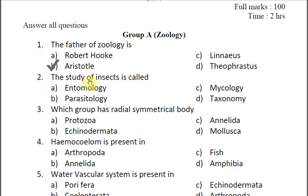Question two: The study of insects is called — A entomology, B parasitology, C mycology, D taxonomy. The answer is A entomology. Parasitology is the study of parasites, mycology is the study of fungi, and taxonomy is the study, identification, classification and nomenclature of living organisms.